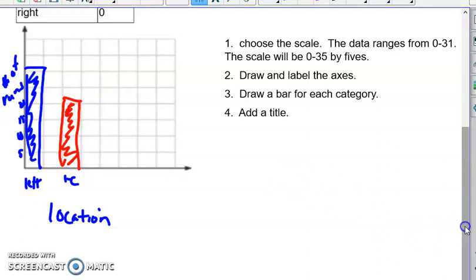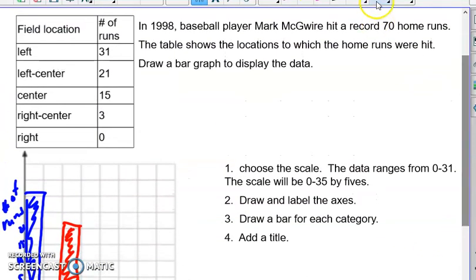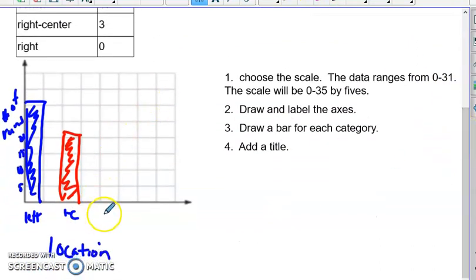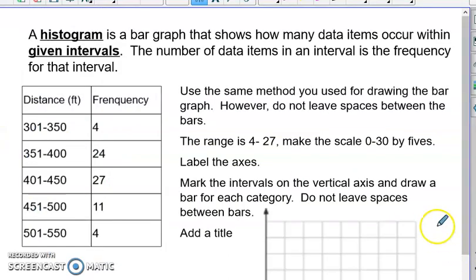And the next one is center, and that has 15. So this one is center. And it has 5, 10, 15. You can see how this is going to go from here. And then you want to give your graph a title, maybe number of hits or something or location of hits.